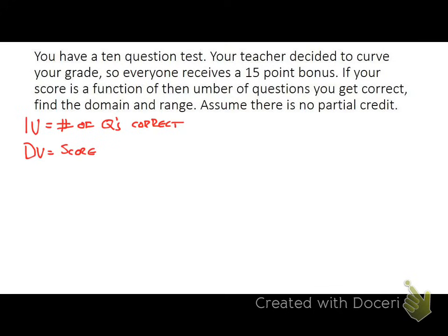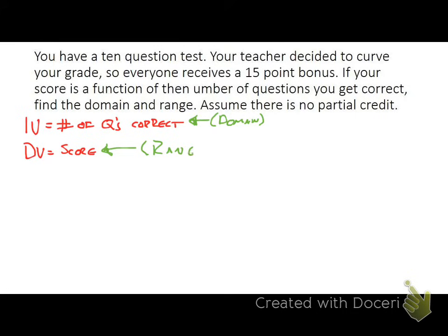This is important to know because the entire group of our independent variable, our X values, we refer to that as our domain. Our dependent variable of score is important because that entire group of our dependent values — typically Y — we refer to that group as our range.